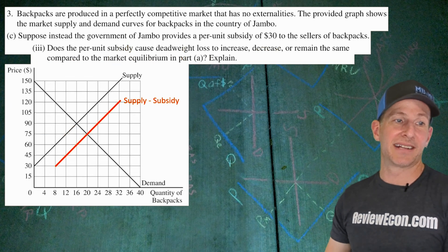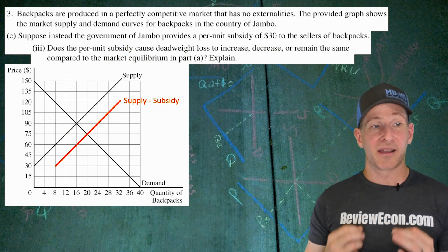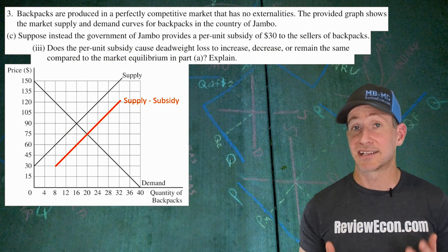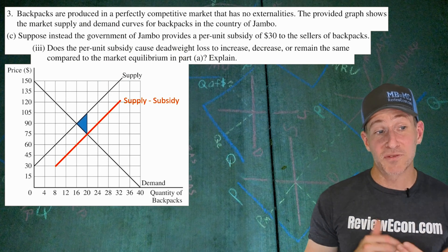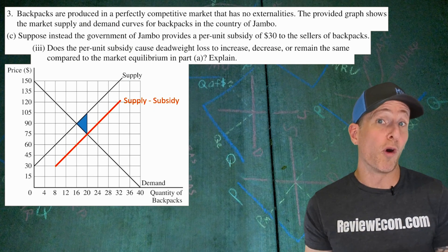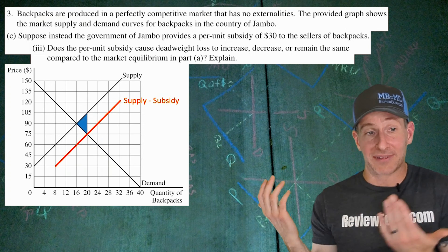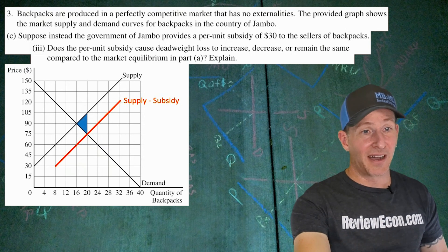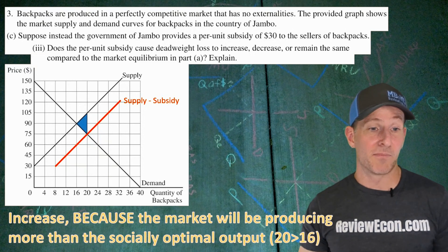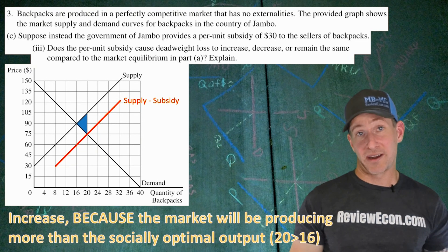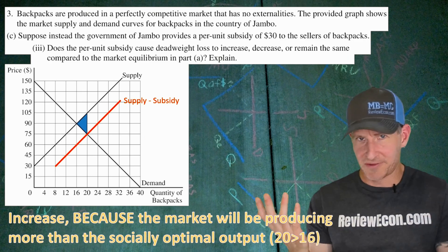Does the per-unit subsidy cause deadweight loss to increase, decrease, or remain the same compared to the market equilibrium? The deadweight loss increases, because as a result of this subsidy we're overproducing relative to the allocatively efficient quantity. The socially optimal quantity is 16, but we're producing 20. So deadweight loss increases because the market is producing more than the socially optimal quantity of output. There was no deadweight loss at the original equilibrium.